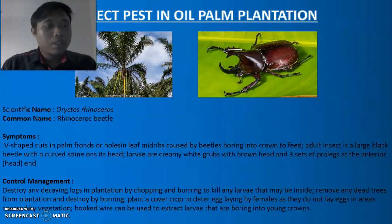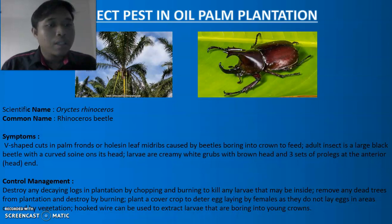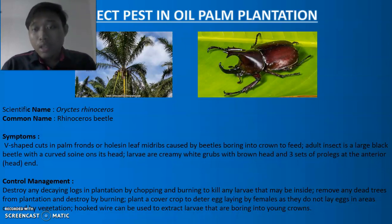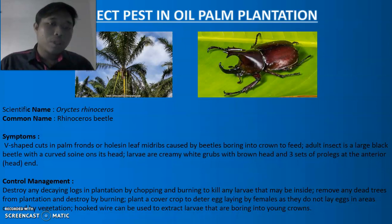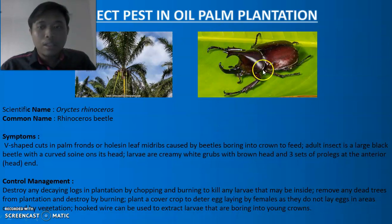The insect pests in oil palm plantation: the most notable insect is Oryctes rhinoceros, with the common name Rhinoceros beetle. The symptoms include V-shaped cuts in palm fronds or hollow leaf midribs caused by beetles boring into the crown to feed. The adult insect is a large black beetle with a curve on its head. The larvae are creamy white grubs with a brown head and three sets of prolegs at the anterior end. As you can see here, this is the prolegs.